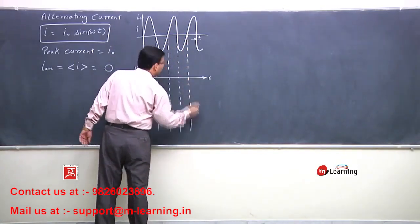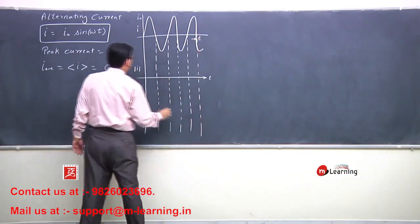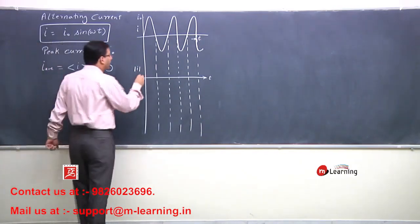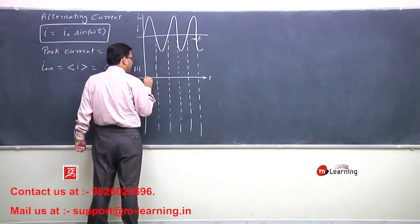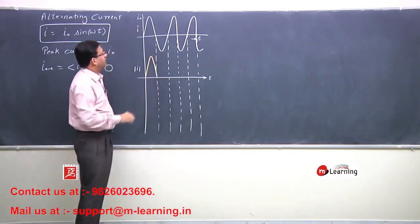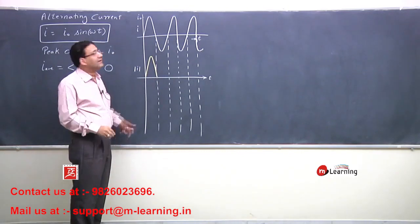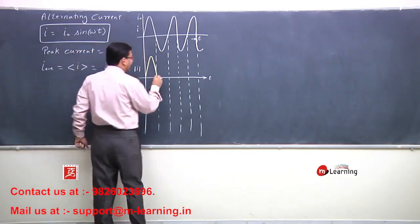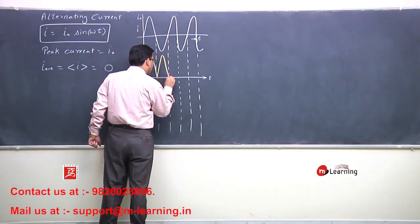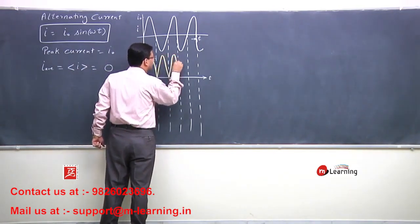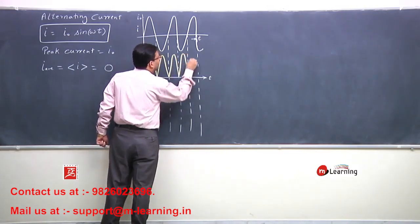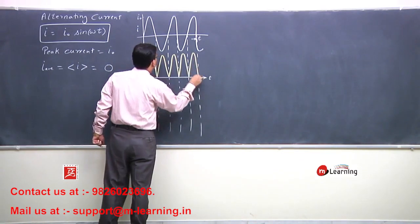This is the timeline. Now, magnitude of I would be drawn in this manner. Now, I am not saying sign. First half is positive current. Second half is negative current. Magnitude of I, this is the magnitude of I. Third half is this. Fourth half is this. Then, second half is this. And so on.